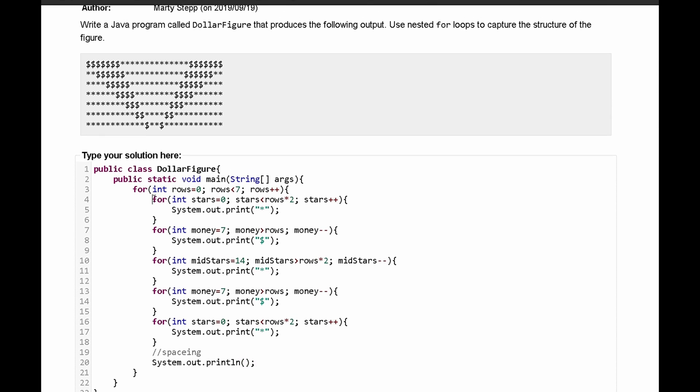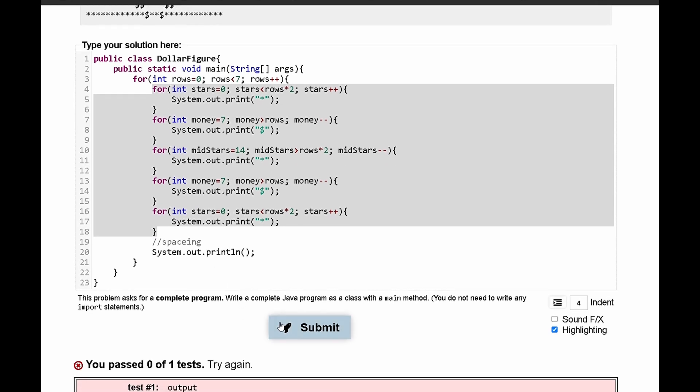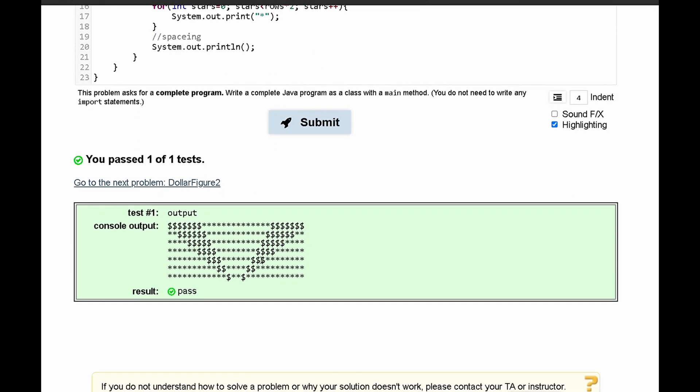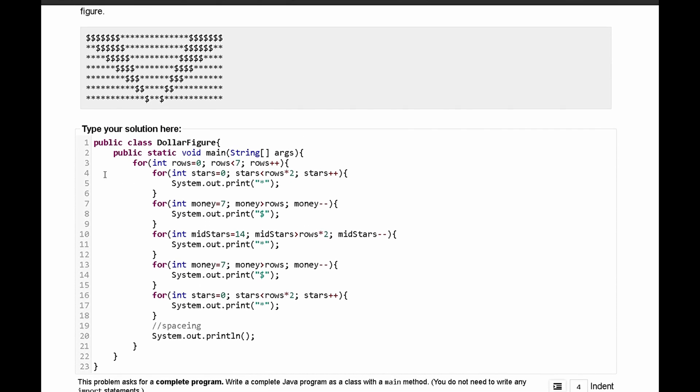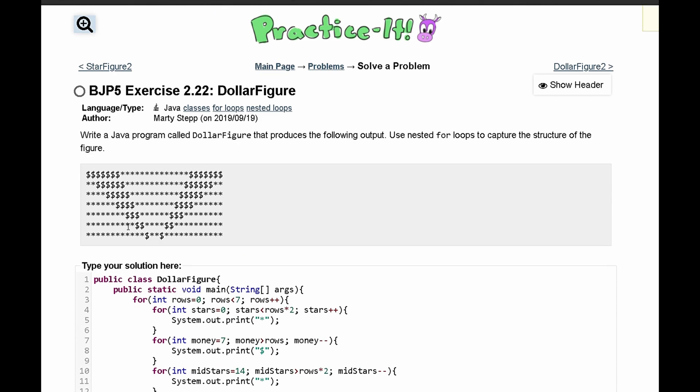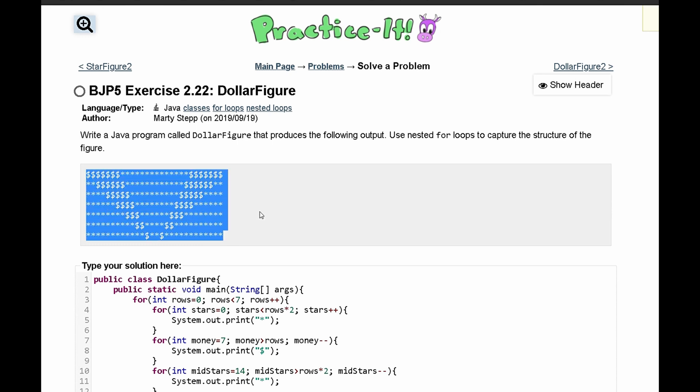What this is doing is after it runs all of this, so basically after it outputs one line of code here, it's going to make a new line to print out the next line of code. If we submit this, we can see that we have passed the test. So this is the code that we need to produce the output that we were given.